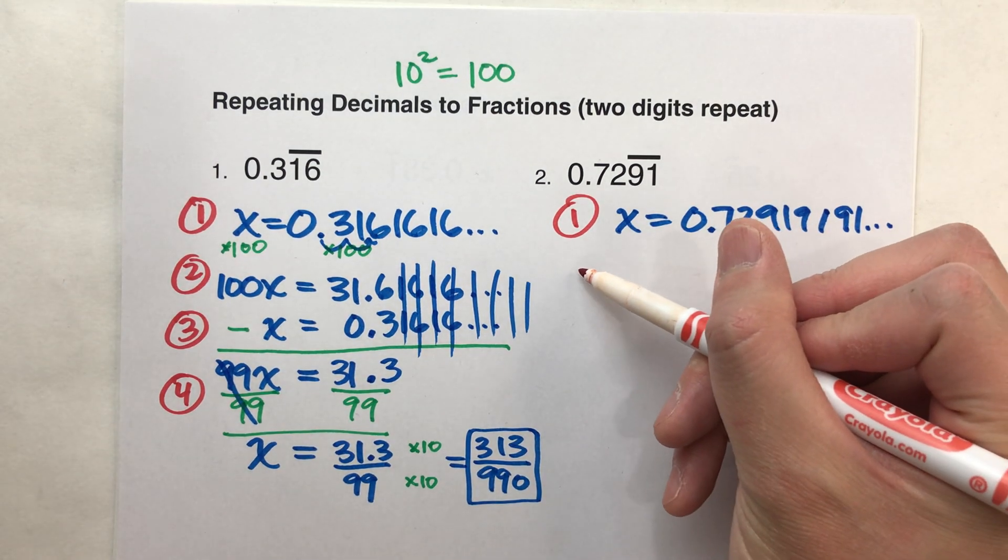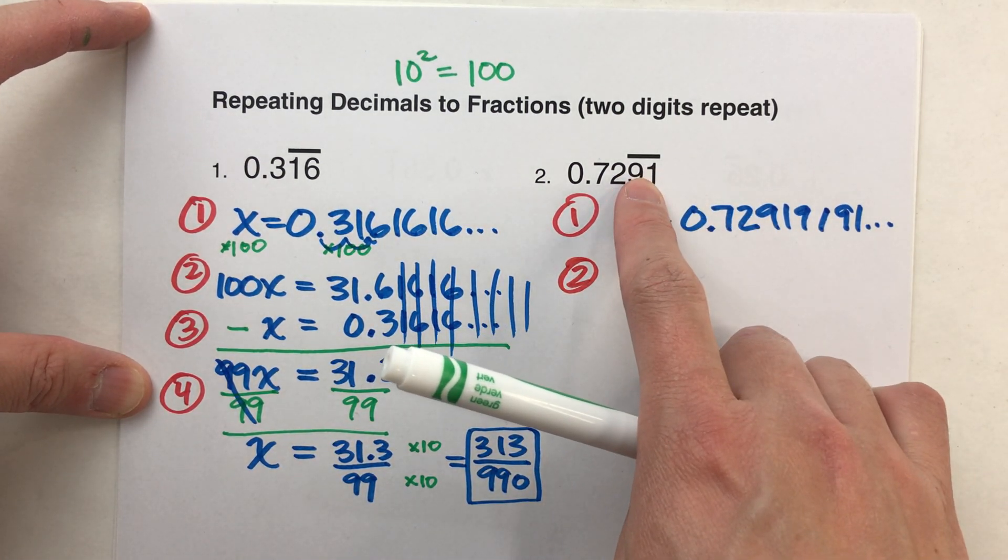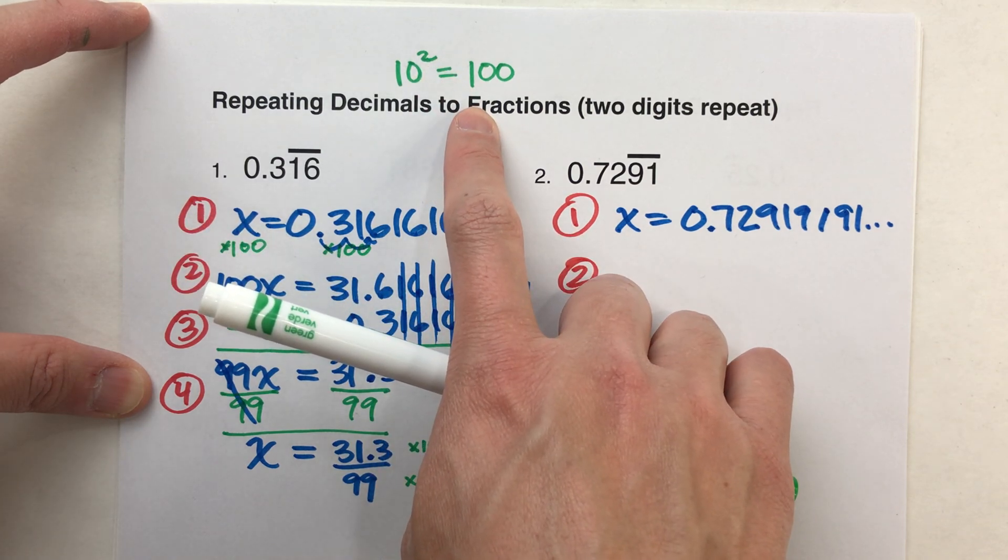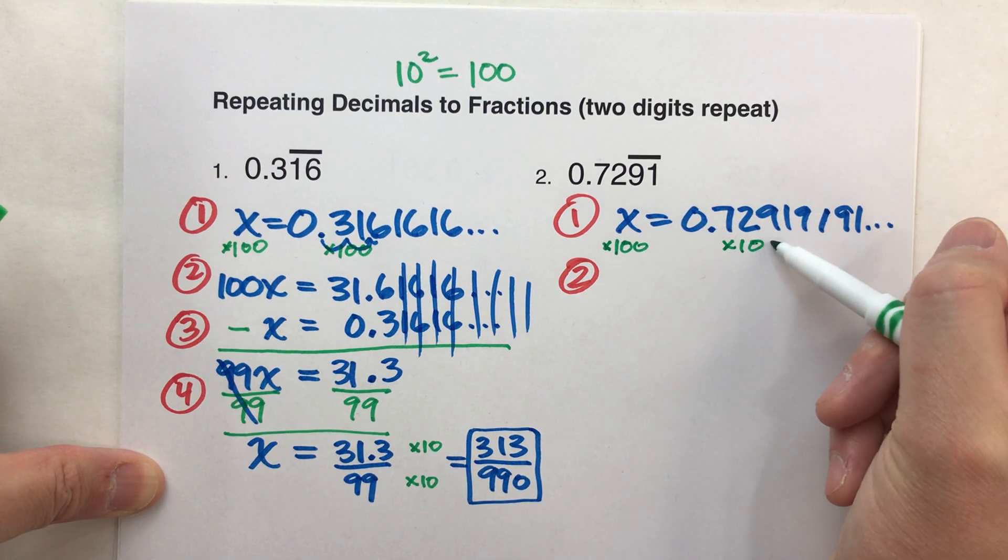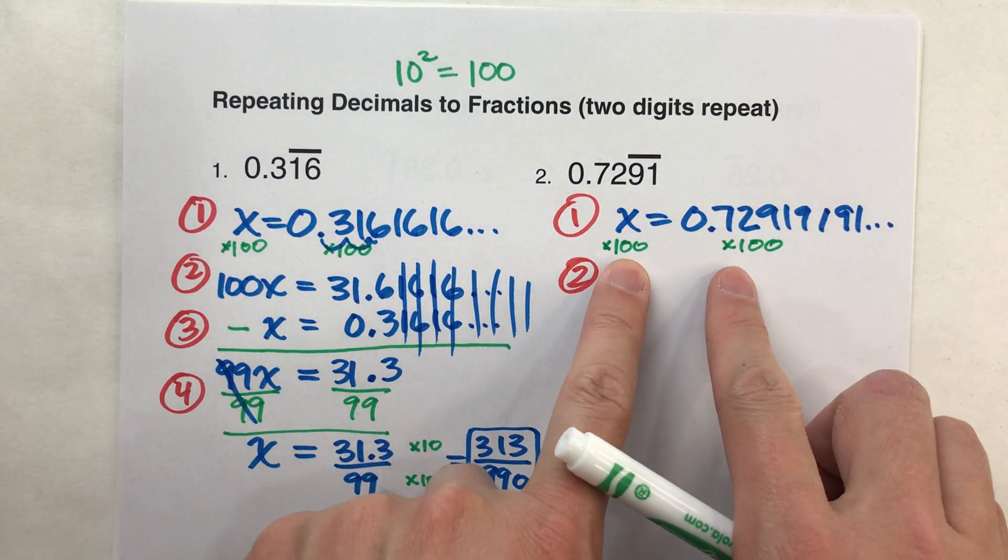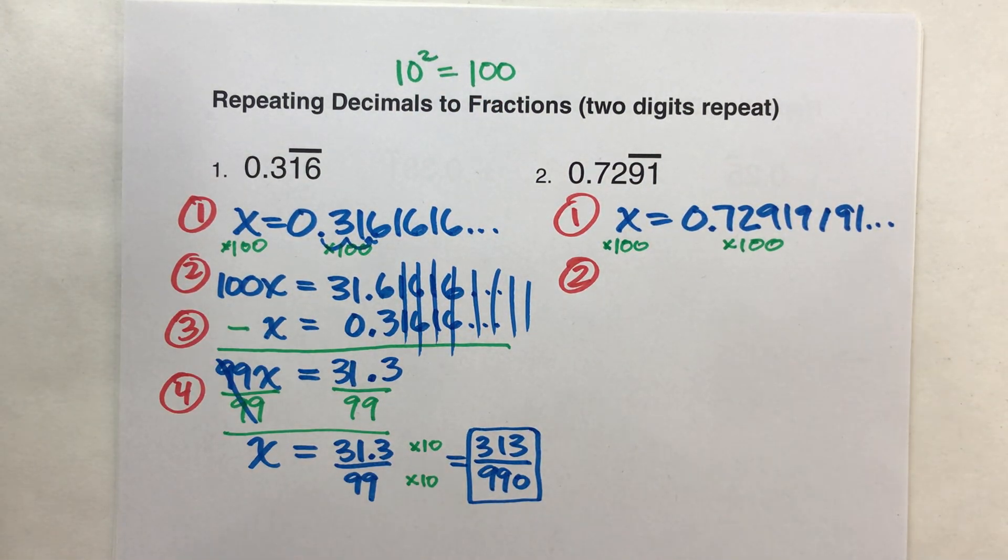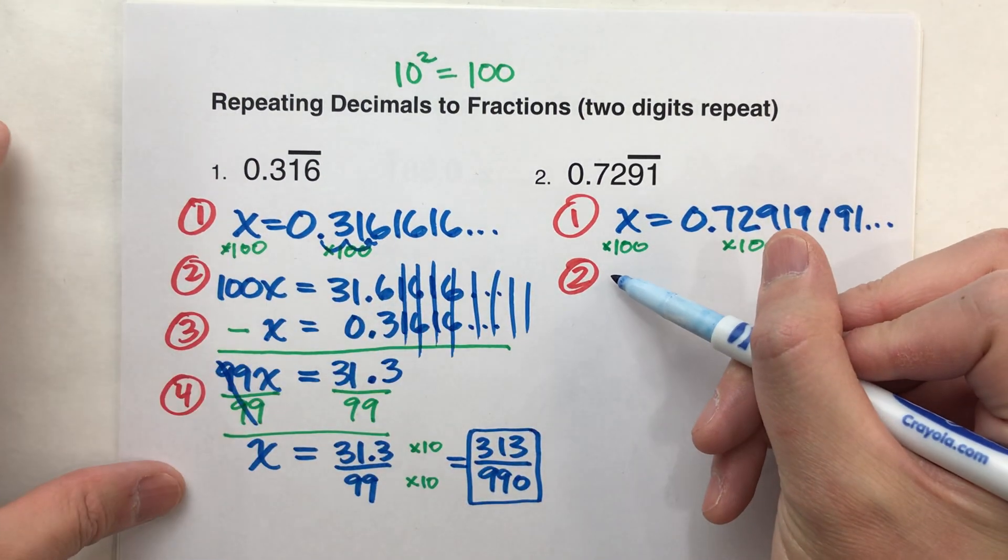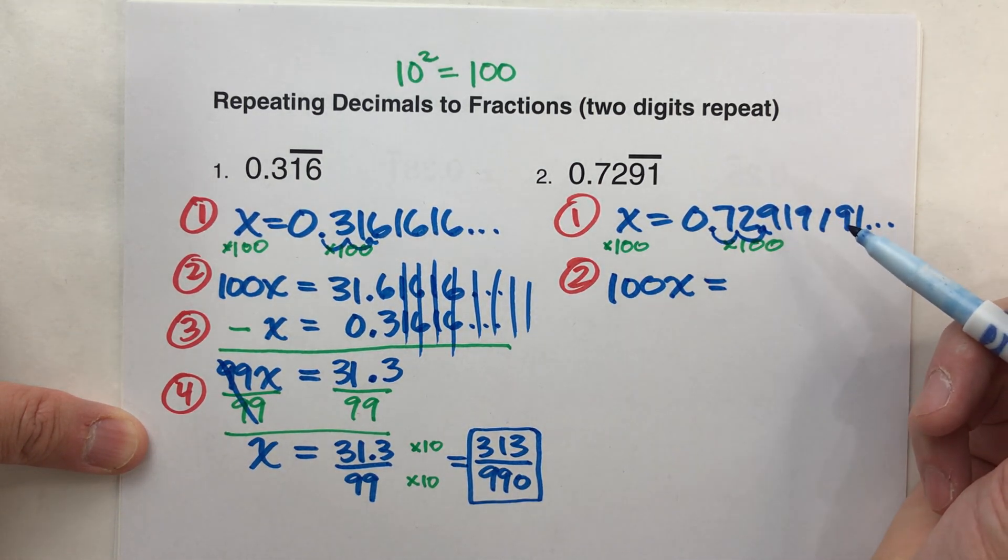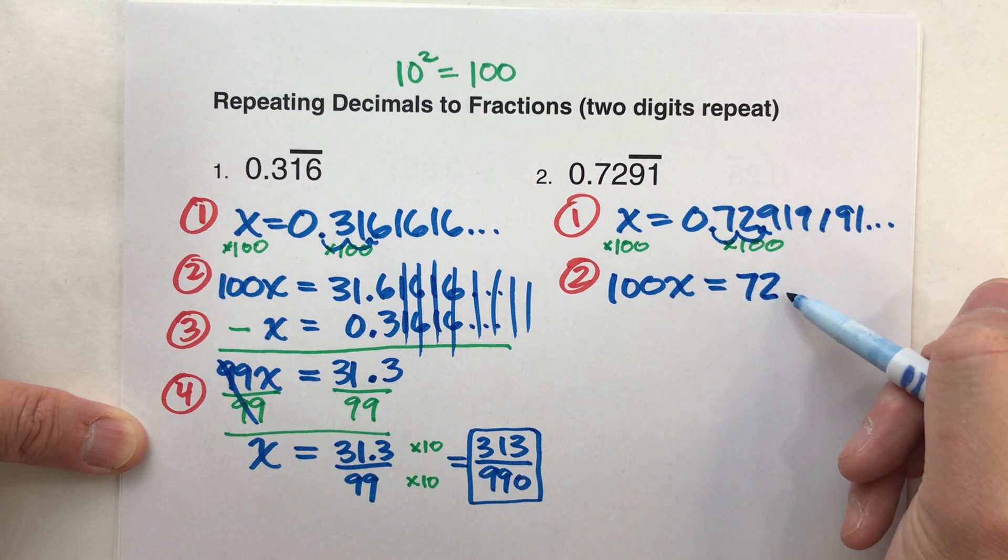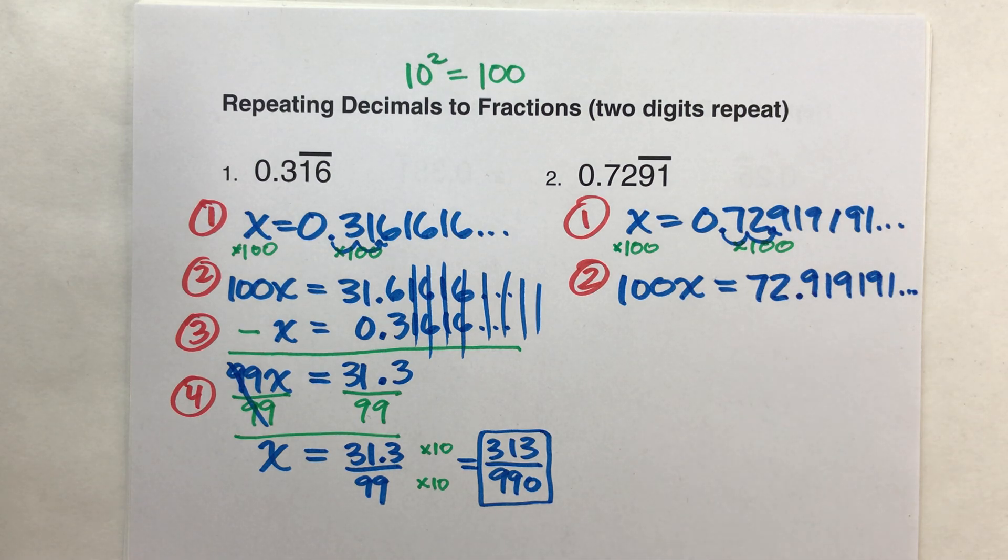Step two. We are going to make a second equation by multiplying the original equation by, since we've got two digits, 10 to the second power. So we're going to multiply both sides by 100. Just like we did last time. And again, remember, it's 100 because we've got two digits repeating. So we had to do 10 to the second power. When I do that, 100 times x is 100x. On the other side, when I multiply this by 100, I'm simply moving the decimal point over two spots. So this becomes 72.919191, et cetera, forever.